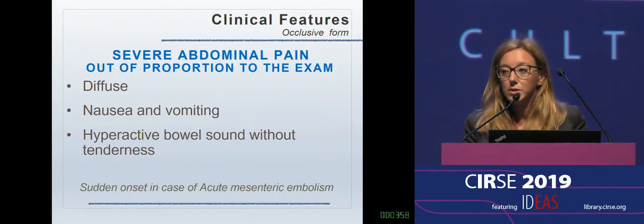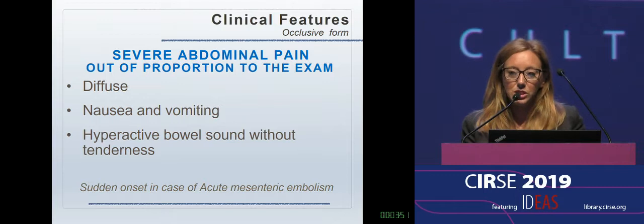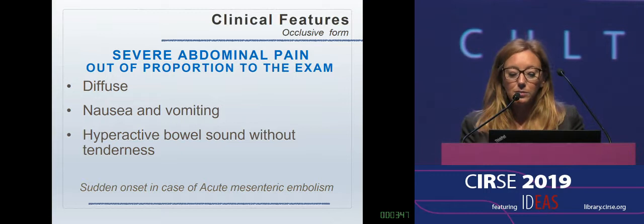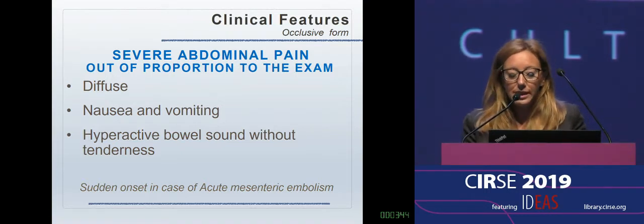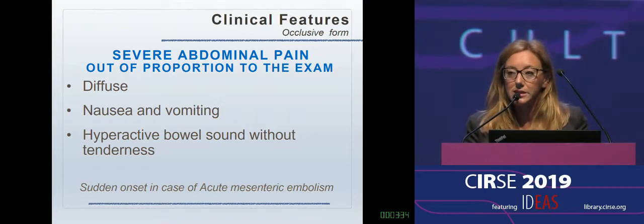The key symptom is pain. Patients complain about severe abdominal pain described as out of proportion to the examination. Pain can be diffuse, associated with nausea and vomiting, and hyperactive bowel sounds without tenderness should be present. In the case of acute mesenteric embolism, the pain can be of sudden onset. In the case of venous thrombosis, pain can come and go many days before the diagnosis is established.